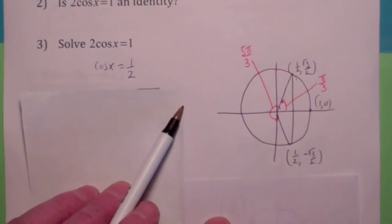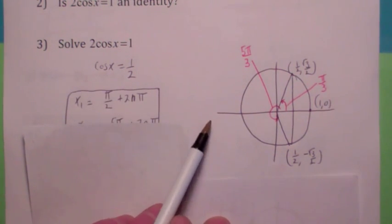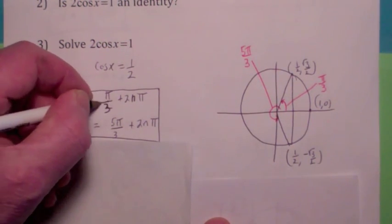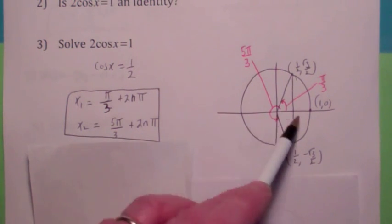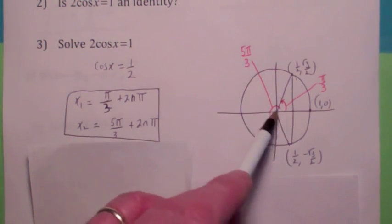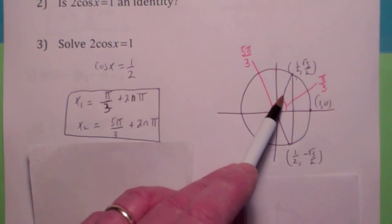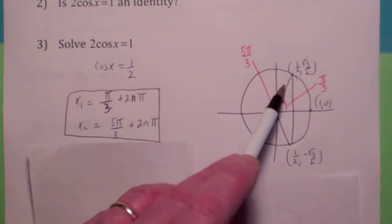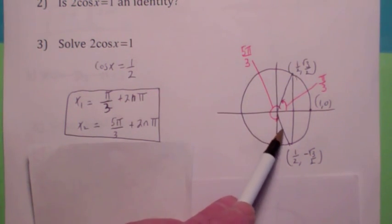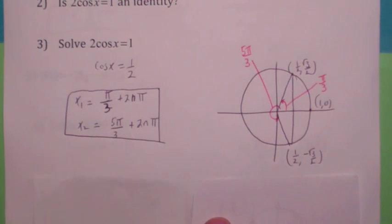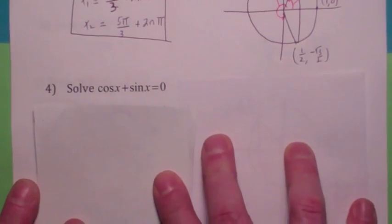So how would you represent all the solutions? For pi over 3 — pi over 3 plus 2n pi — you can wrap around either direction, where n can be any integer. This is how you talk about all possible angles coterminal with this one. For the fourth quadrant solution: 5 pi over 3 plus 2n pi, where n could be a positive or negative integer.